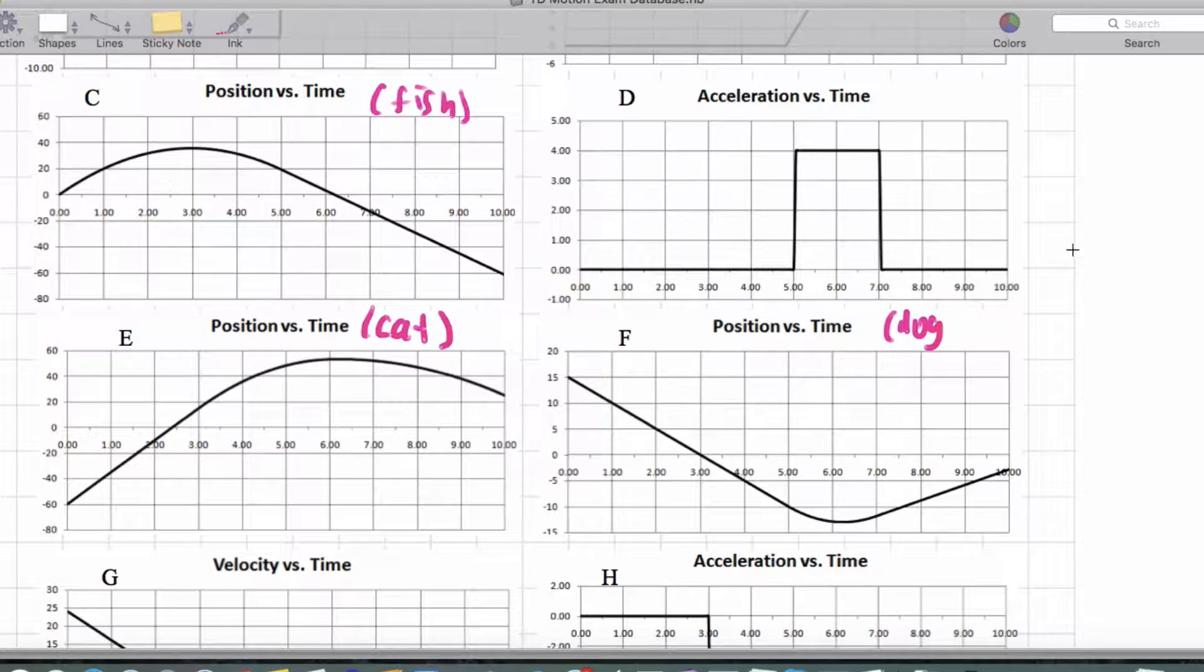So now we want to figure out what the velocity and acceleration graphs look like. For this fish, notice we start off with a positive slope, we go to flat, and then we get a negative steady slope. So to actually draw the velocity versus time graph, we should see a graph that looks like here negative, then goes to zero. So I would actually say here, and then we end up going backwards, so we're gonna go here.